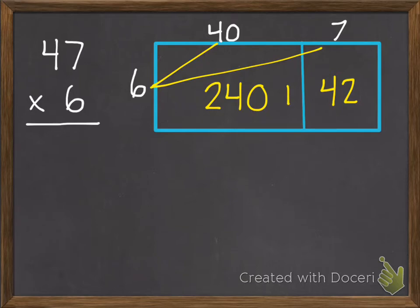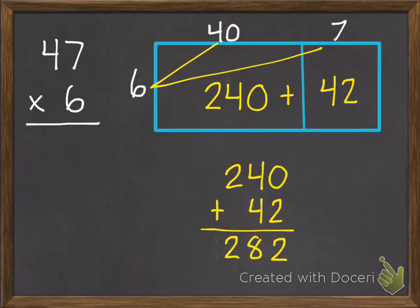Now I can just add my two products together. If you can do this in your head, awesome. If not, just write it down and add it. 240 plus 42 equals 282. So that is our answer using the distributive property.